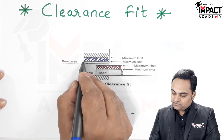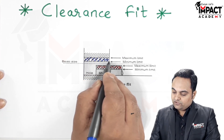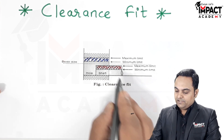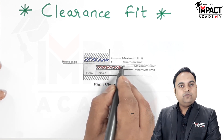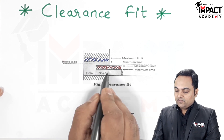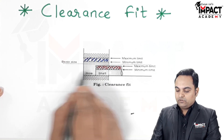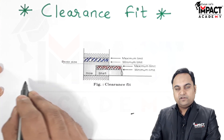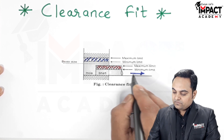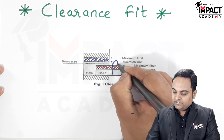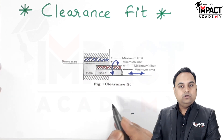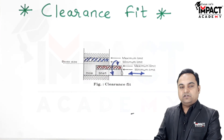In the case of a clearance fit, the minimum size of the hole will always be greater than the maximum size of the shaft. Only then, in any assembly condition of shaft and hole, will we get clearance — meaning the shaft can easily slide and also rotate inside the hole.